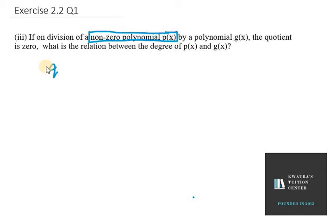The quotient in this case is 0, so Q(x) equals 0. They're asking us what is the relation between the degree of P(x) and G(x).